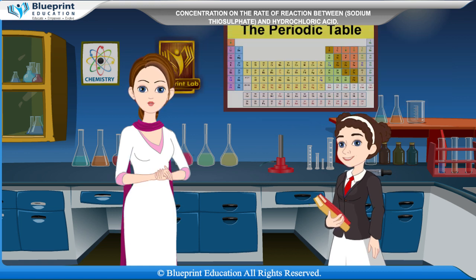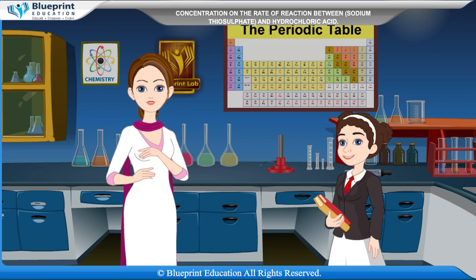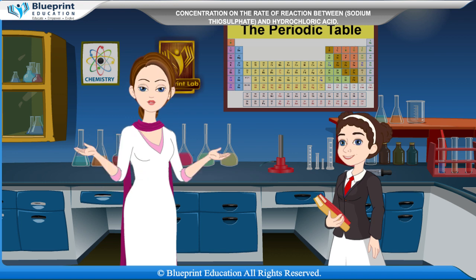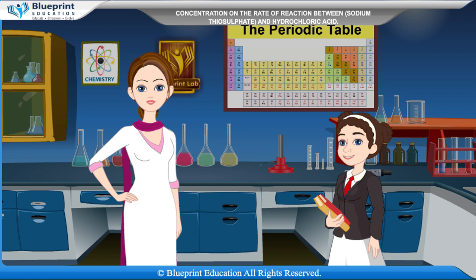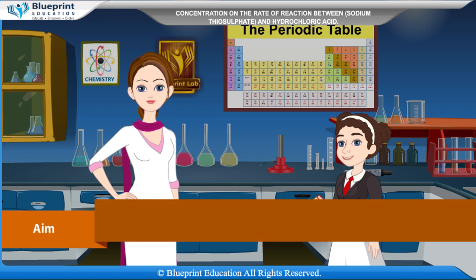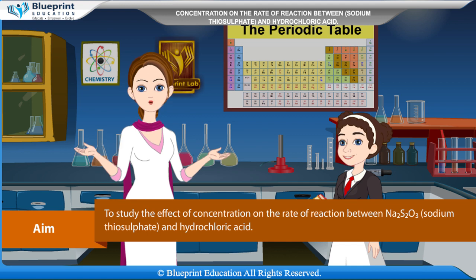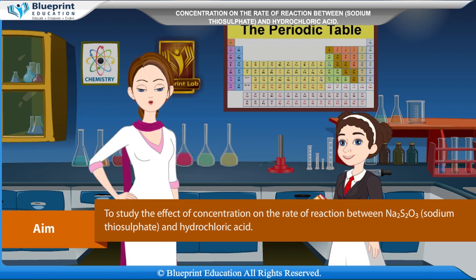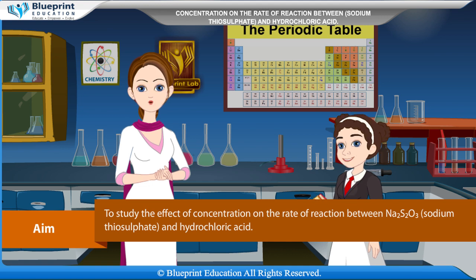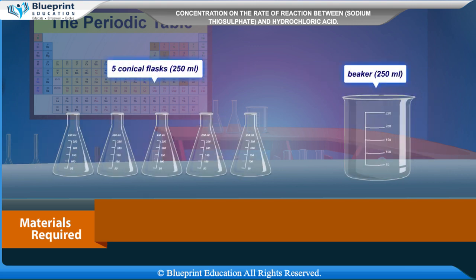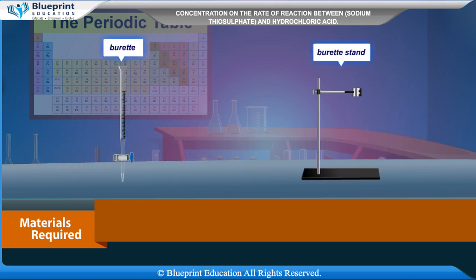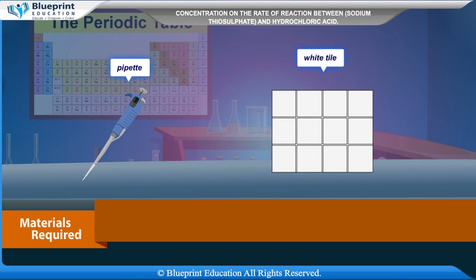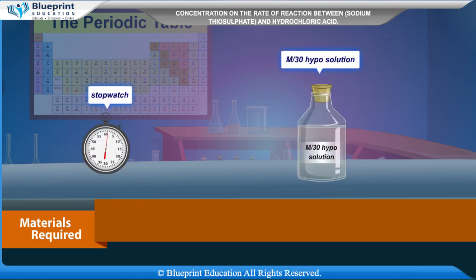Let's do an experiment to study the effect of concentration on the rate of reaction between Na2S2O3 (sodium thiosulfate) and hydrochloric acid. Materials required are: 5 conical flasks (250 ml), beaker (250 ml), burette, burette stand, pipette, white tile, stopwatch, M/30 hypo solution, and 1 M hydrochloric acid solution.